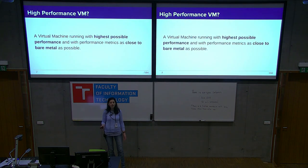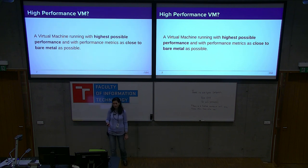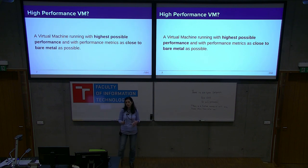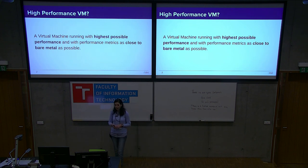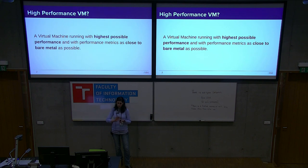Let's start by understanding what a high performance VM is. We are talking about a VM that we want to run with the highest possible performance, as close to bare metal as possible. What we are not supporting is real time — there are people who confuse high performance and real time, but they are two different things. Real time is about predicting a set of operations that should be done in a given amount of time, while high performance is about maximizing the number of operations that can be processed in a given amount of time.